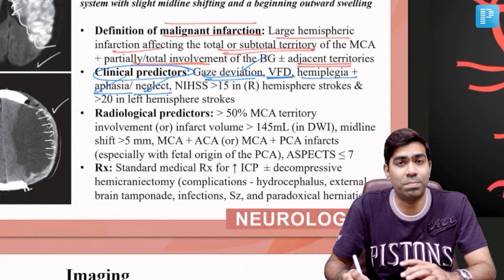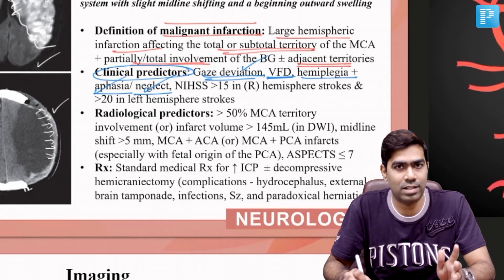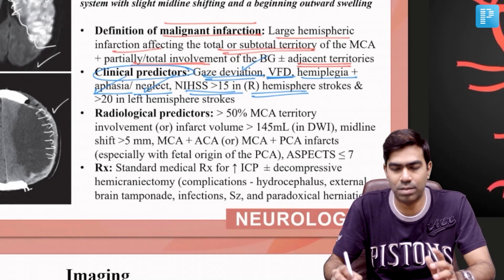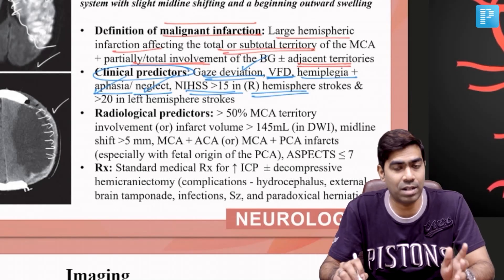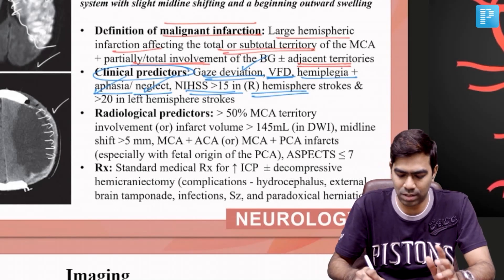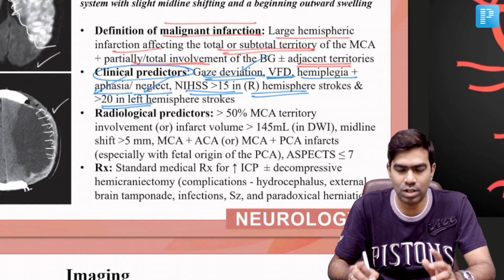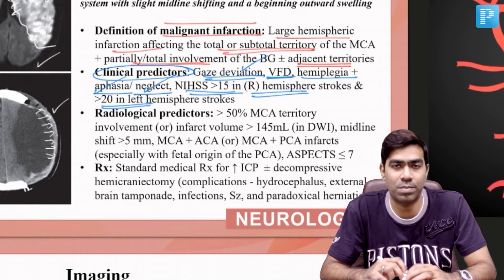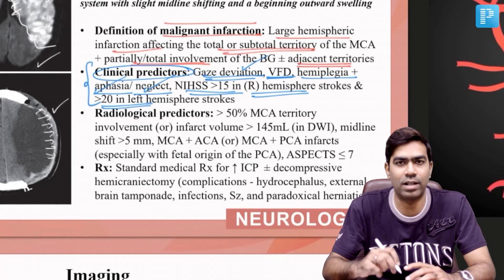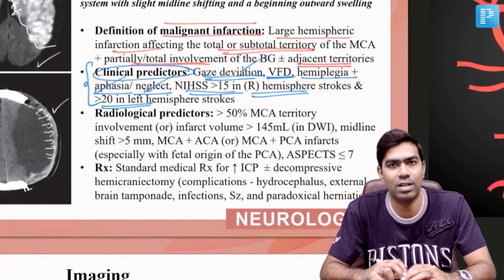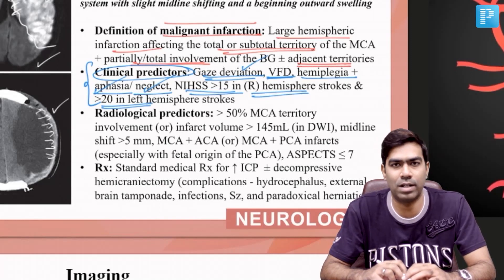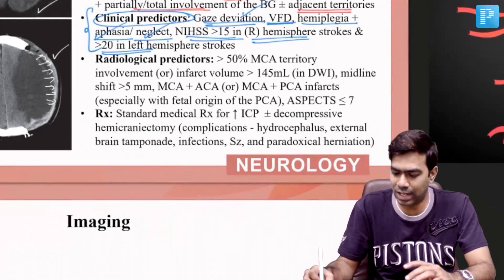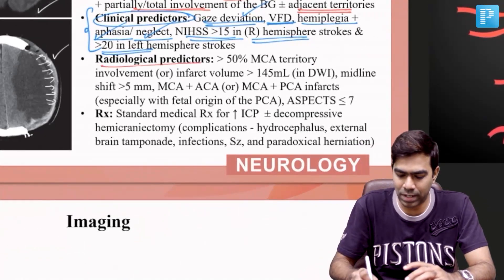If the presentation NIHSS is very high — specifically NIHSS greater than 15 in patients with right hemispheric strokes and NIHSS greater than 20 in patients with left hemispheric strokes — these are clinical predictors of development of malignant cerebral edema. Now, what are the radiological predictors?